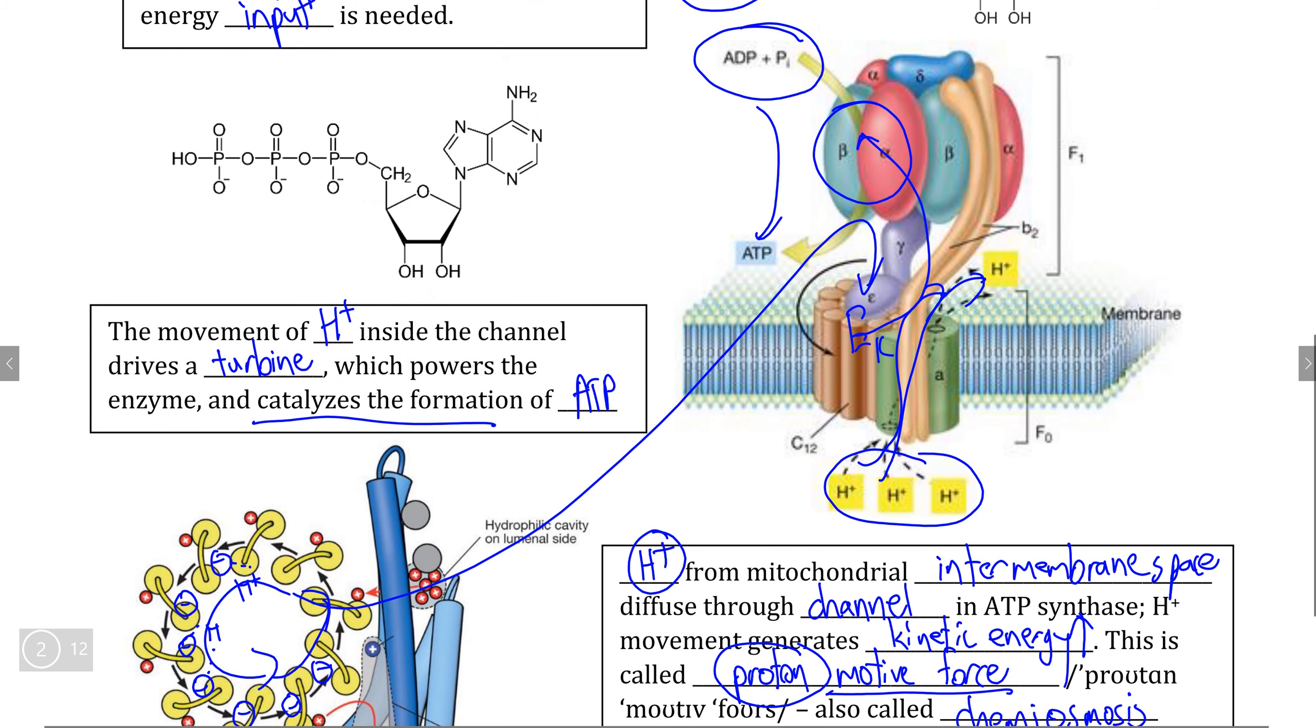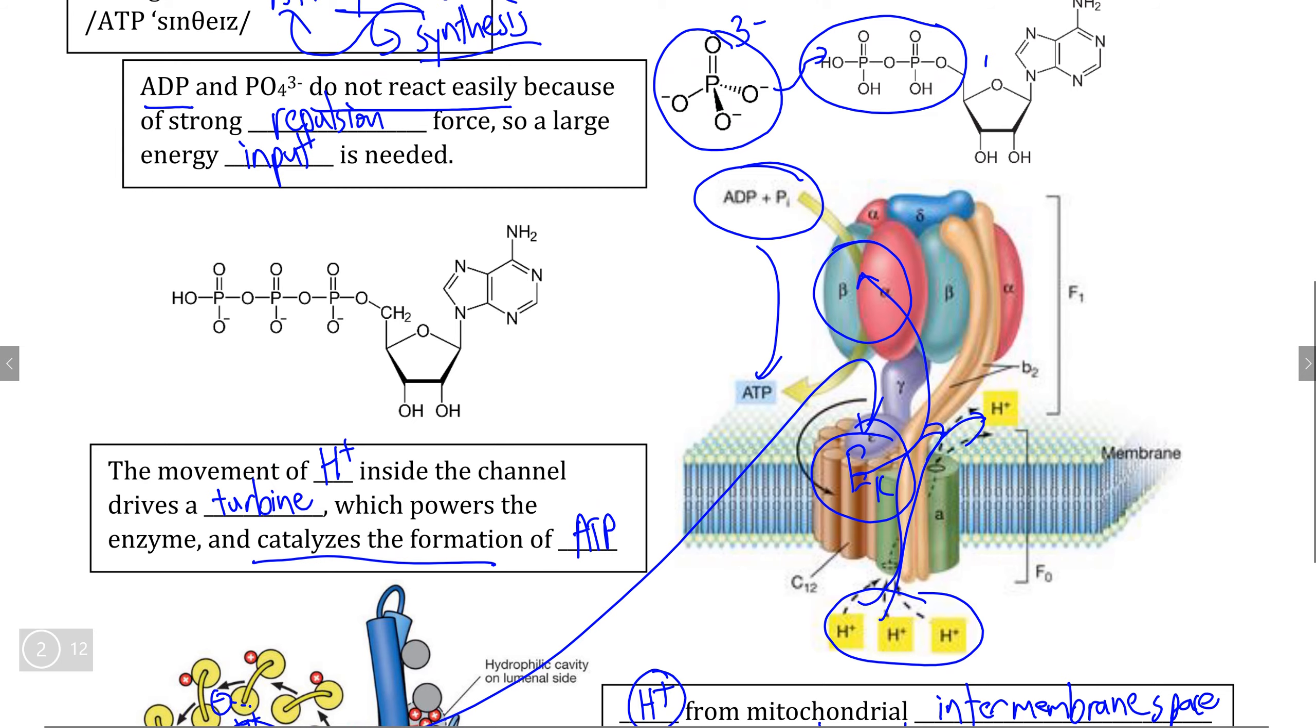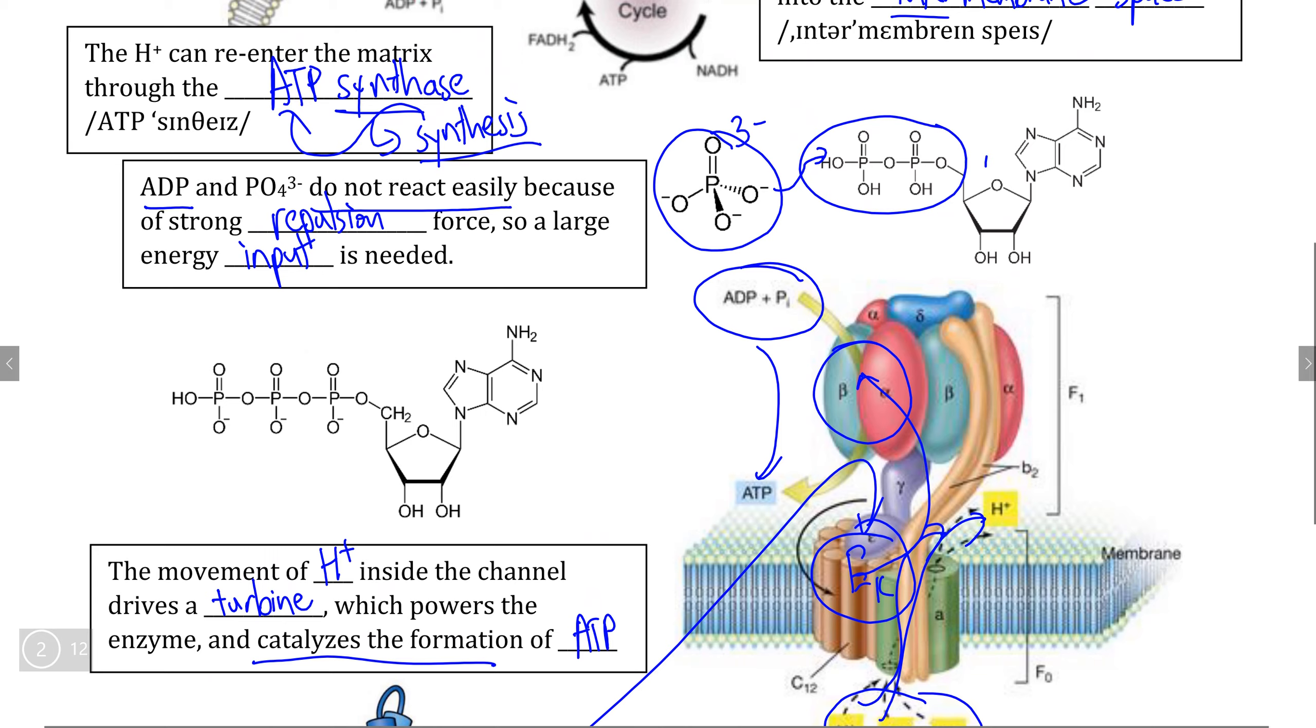And it is that conversion of kinetic energy of the movement of H plus into the energy that the enzyme uses to drive this reaction forward that allows the attachment of a phosphate onto ATP, thereby completing the process of cellular respiration.